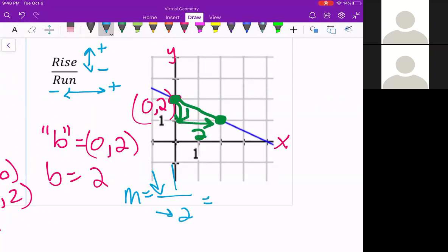And based off rise over run, if we go down, that is negative. If we go to the right, that is positive. So my slope, again, a negative 1 half.